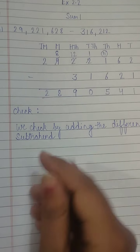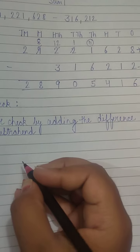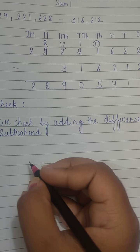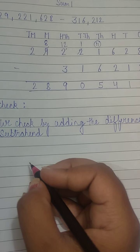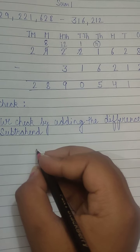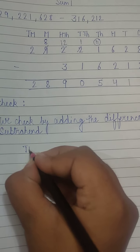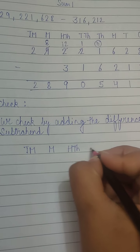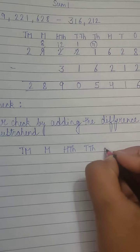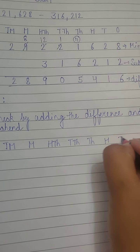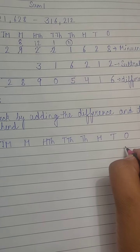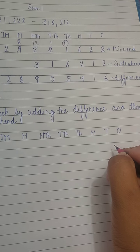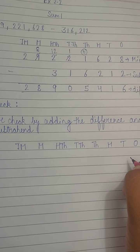We will check it now. Here we have the difference and we will add it. We will write the place value columns the same way: ten million, million, hundred thousand, ten thousand, thousand, hundred, ten, ones. We will add the difference and the subtrahend.